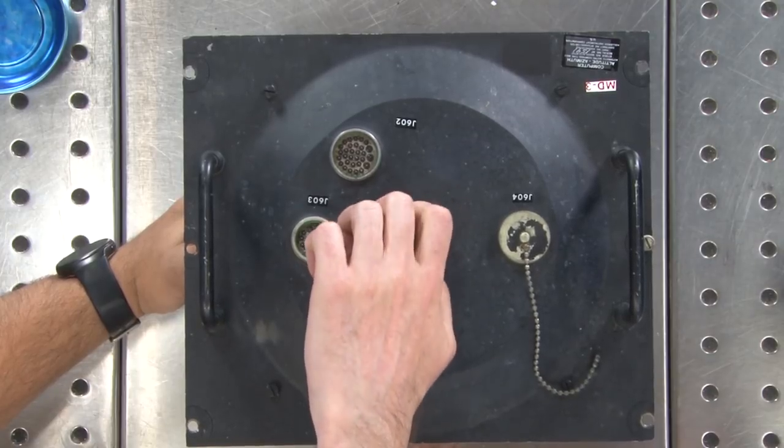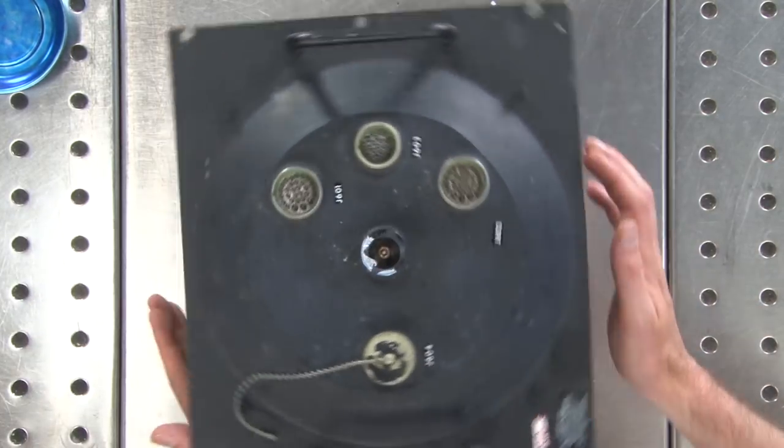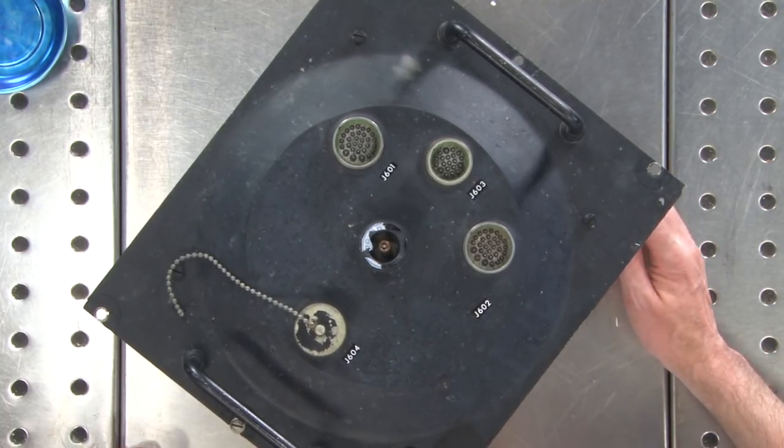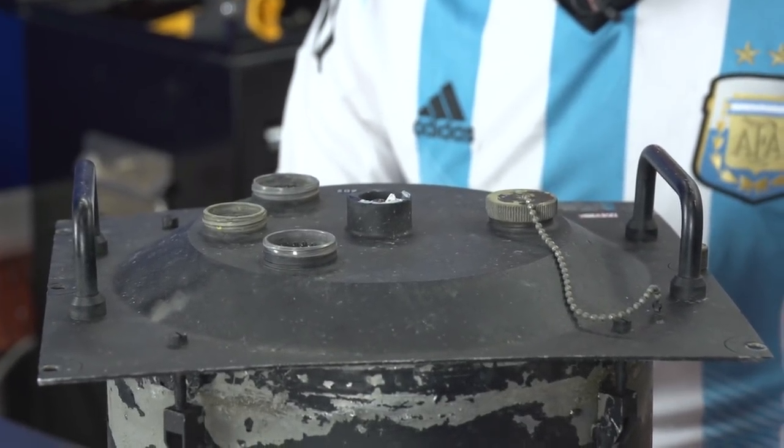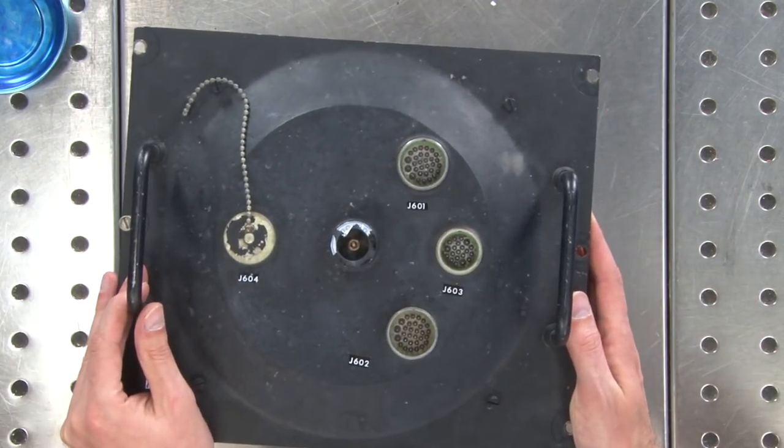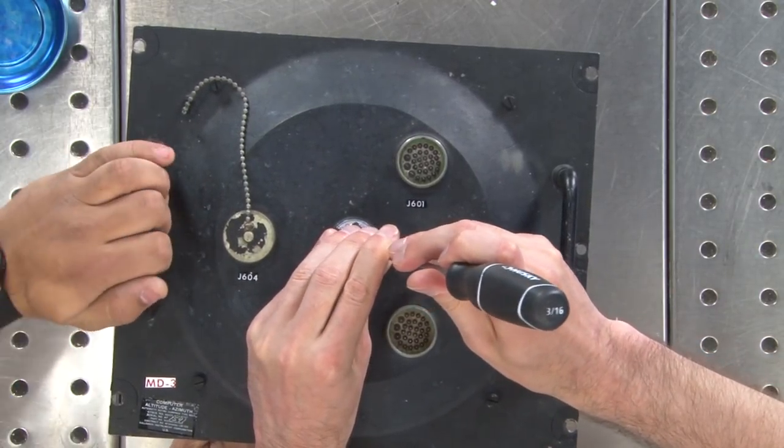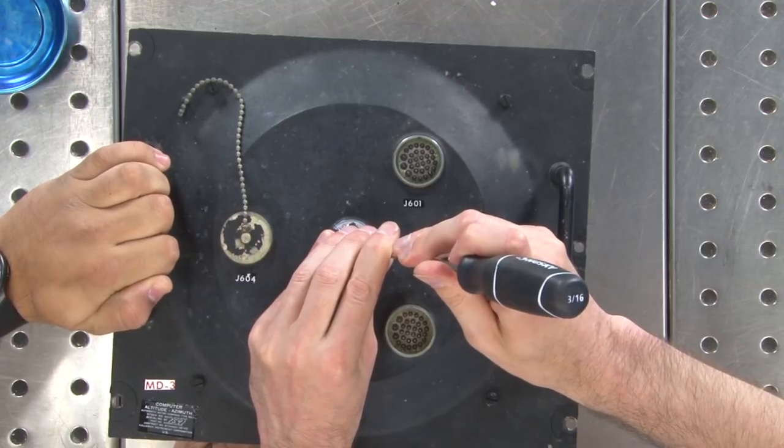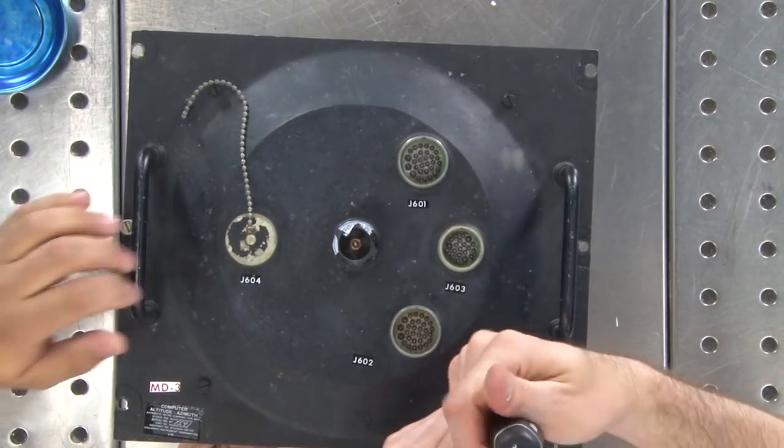So we're gonna start. This is a altitude azimuth computer, a mechanical computer. Computer altitude azimuth automatic astro compass type MD1, stock number 6605-673-6737, made by the Kollsman Instrument Corporation US. It's a mechanical computer and it's amazing inside. So the first thing I do is equalize the pressure with the Schrader valve. Now we're going to take out the main mounting screws.